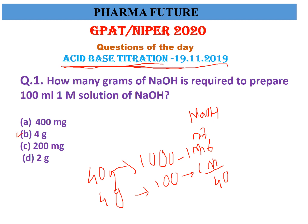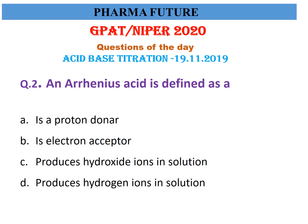Second question: the Arrhenius acid is defined as — options are: proton donor, electron acceptor, produces hydroxide ion in solution, or produces hydrogen ion in solution. The right answer is 'produces hydrogen ion in solution.' If it produces hydroxide ions, it is an Arrhenius base. If it is a proton donor, it is a Lowry-Brønsted acid. If it is an electron acceptor, that is a Lewis acid.